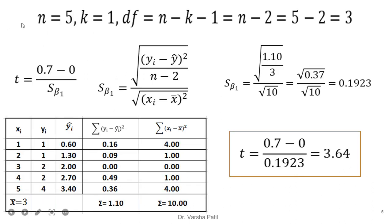Before the t calculation we will check the degree of freedom. Total number of records are 5, number of independent variables k equals 1. Therefore, degree of freedom is n minus k minus 1, which is equal to 3. The numerator is 0.7 minus 0, divided by the standard error of beta 1. Using the formula for standard error and putting in the values already calculated in the table, we get the standard error as 0.19. When we put the standard error into the t formula, we get the answer 3.64.